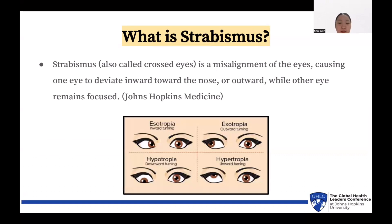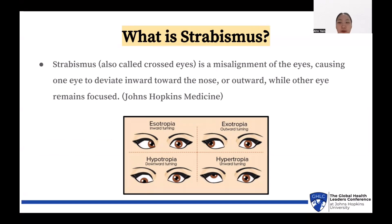So what is Strabismus? According to Johns Hopkins Medicine, Strabismus, also called crossed eyes, is a misalignment of the eyes, causing one eye to deviate inwards towards the nose or outwards while the other eye remains focused. The photo below shows different types of Strabismus.